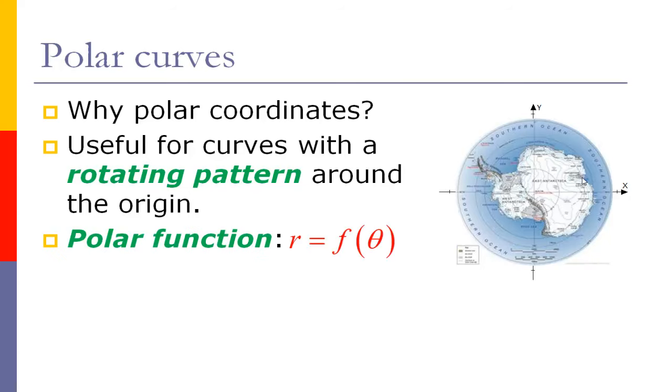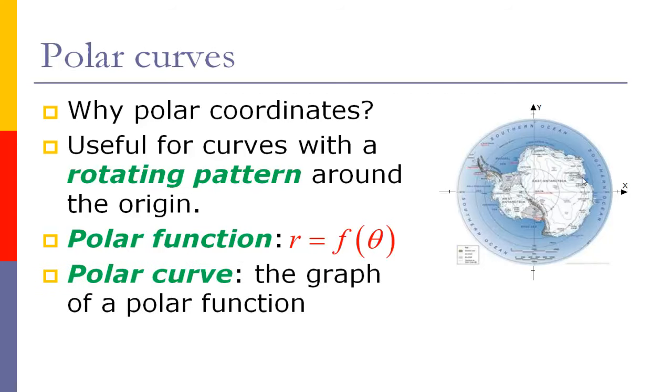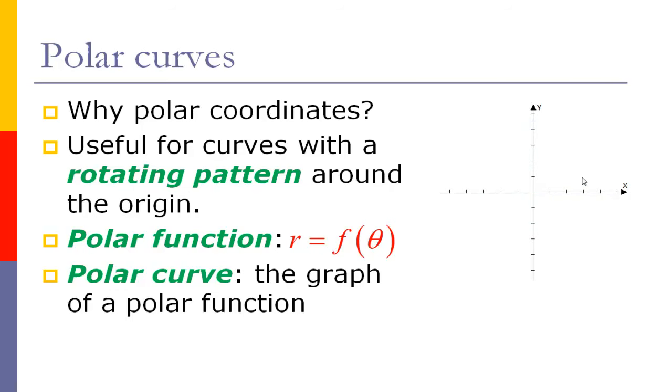So what we are going to be doing is we are going to be using polar coordinates in order to make these curves described in a more easy, more effective way. So in order to do that we are going to start by considering polar functions. A polar function is simply a function where r which is the radius is going to be some function dependent on theta which is the angle. A polar curve then is going to be the graph of a polar function.